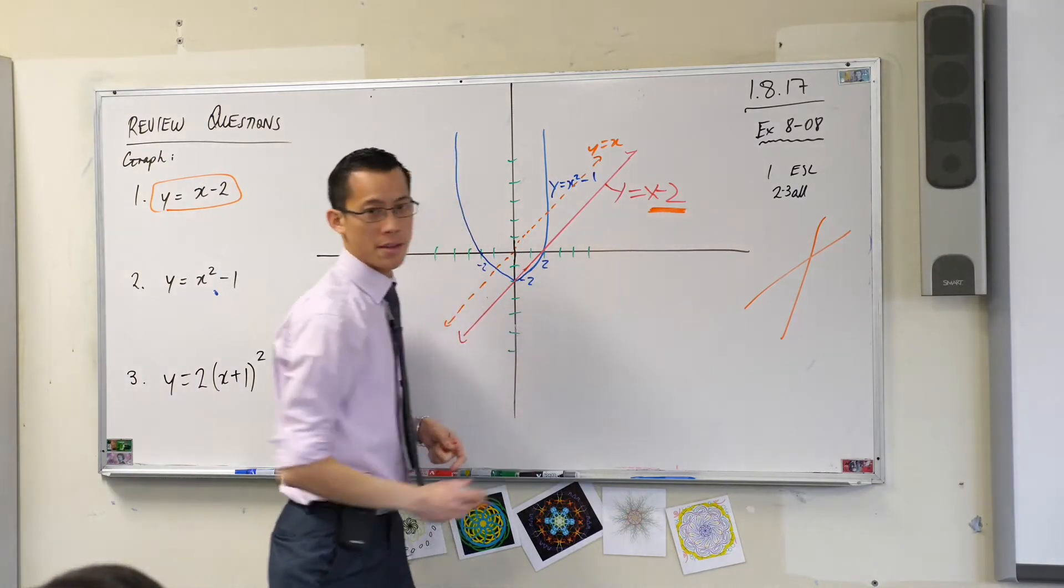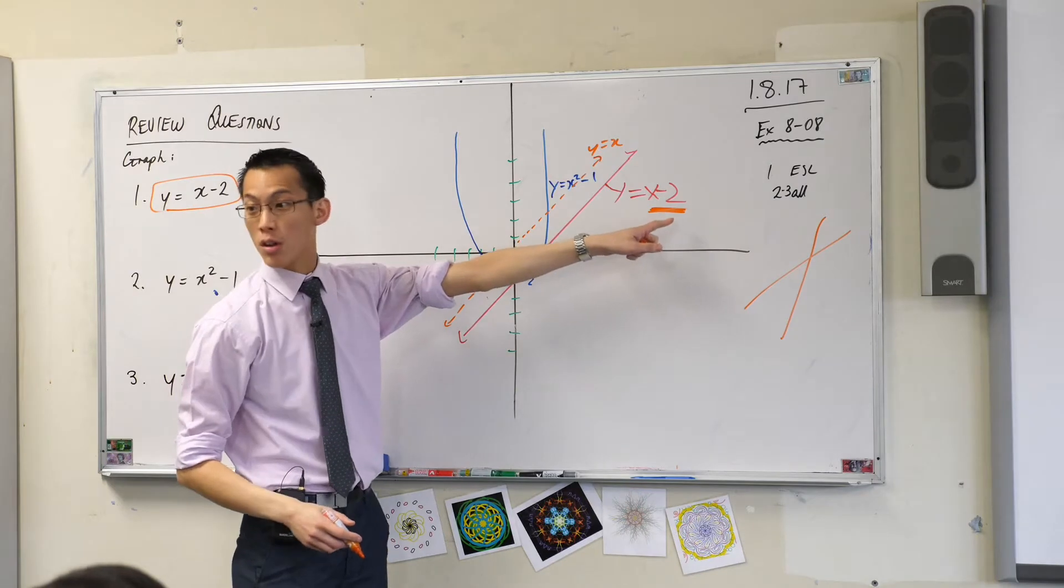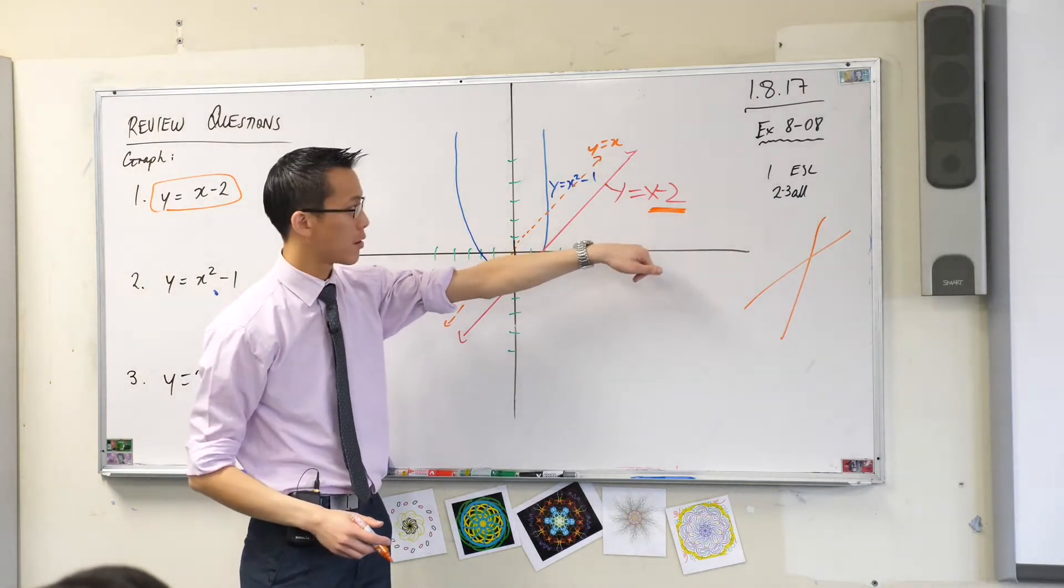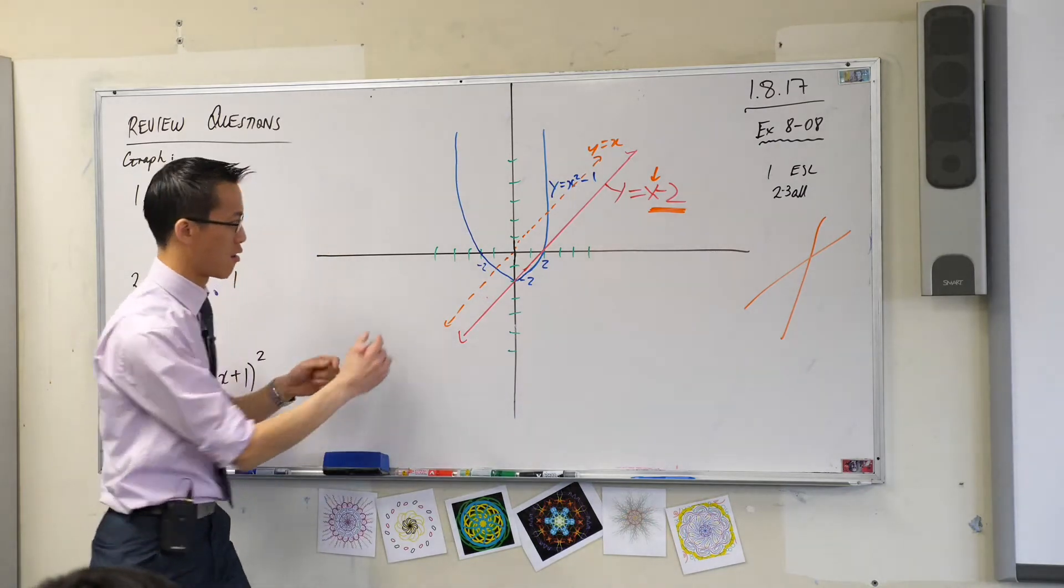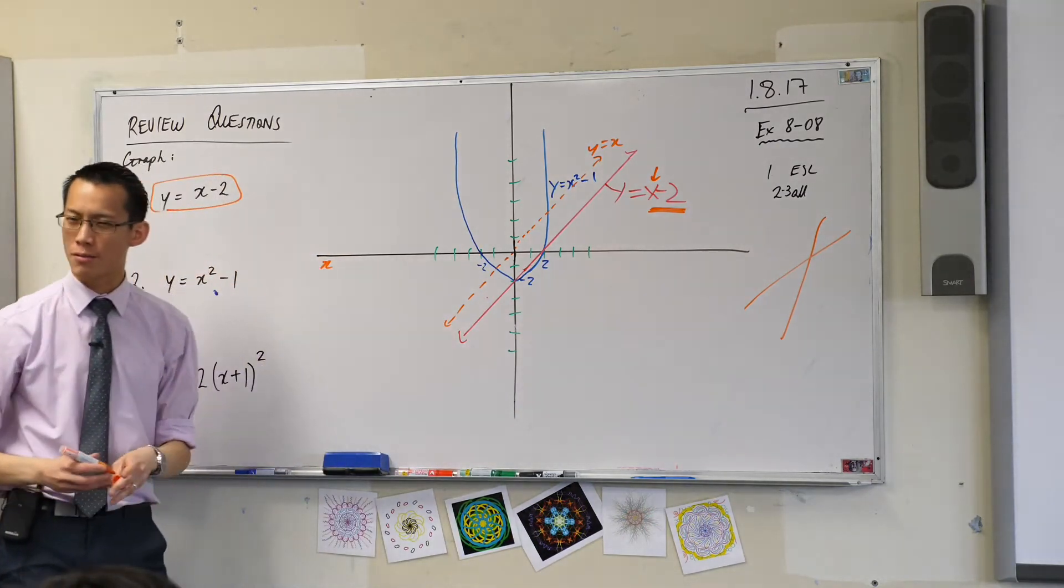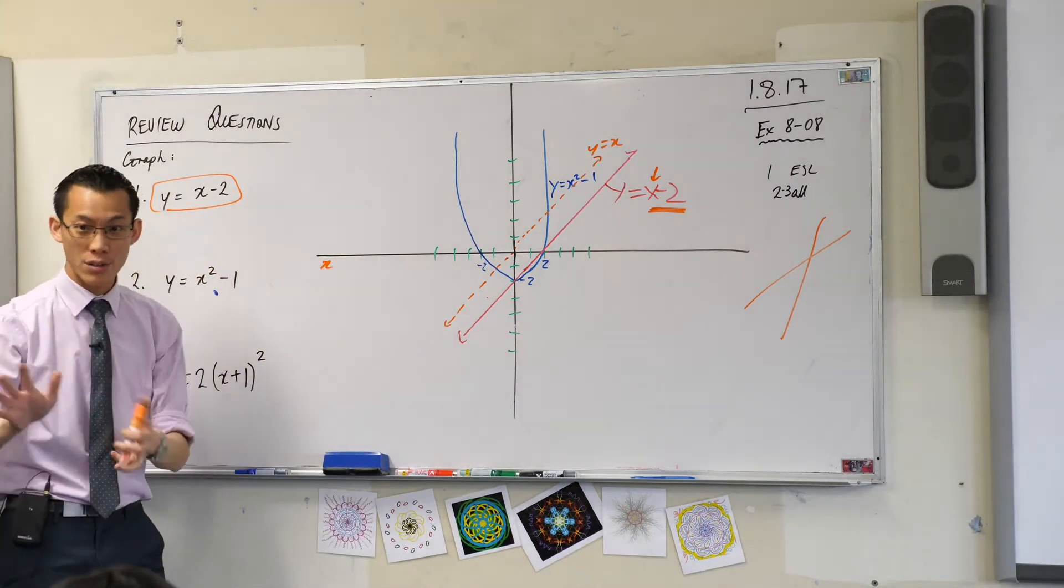That's not a coincidence. That means go to the right two units. It's attached to this x which is a horizontal thing. X is the horizontal axis. So far so good.